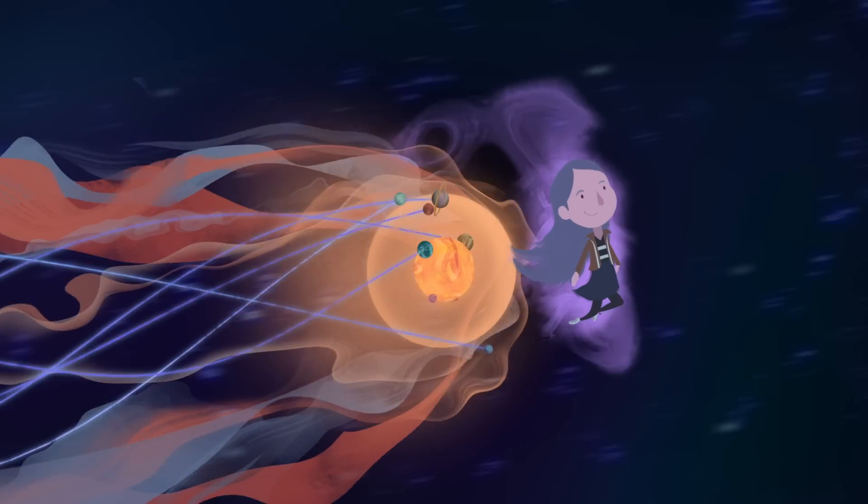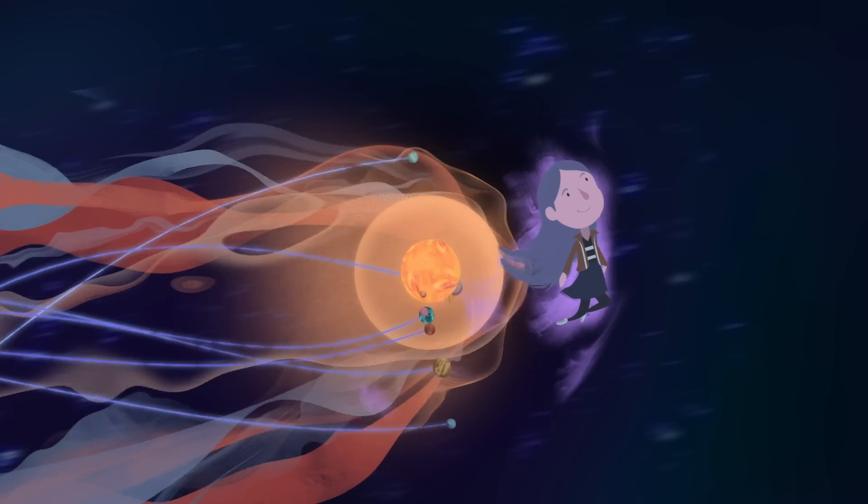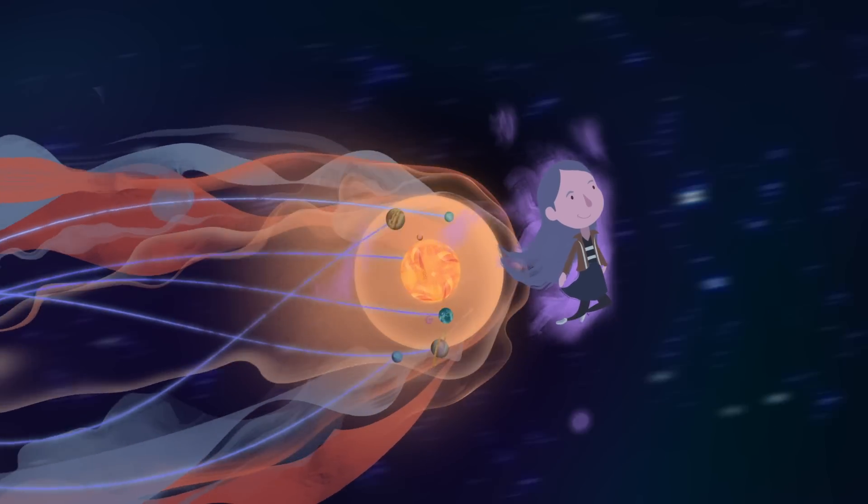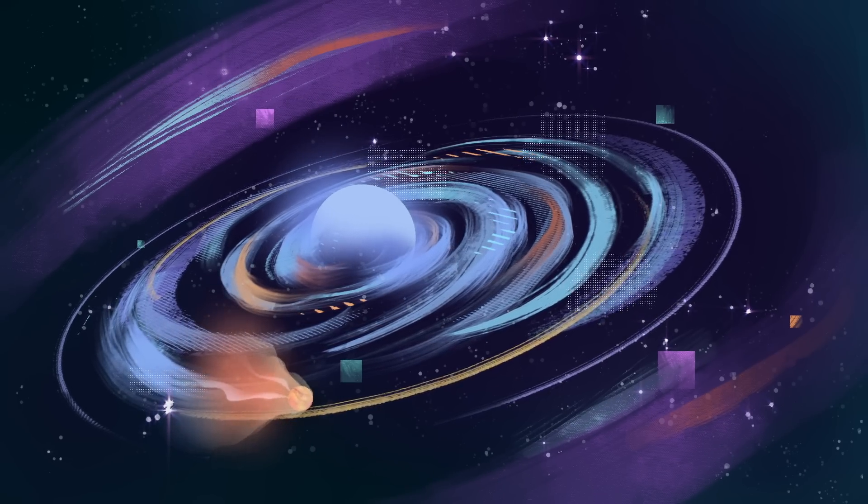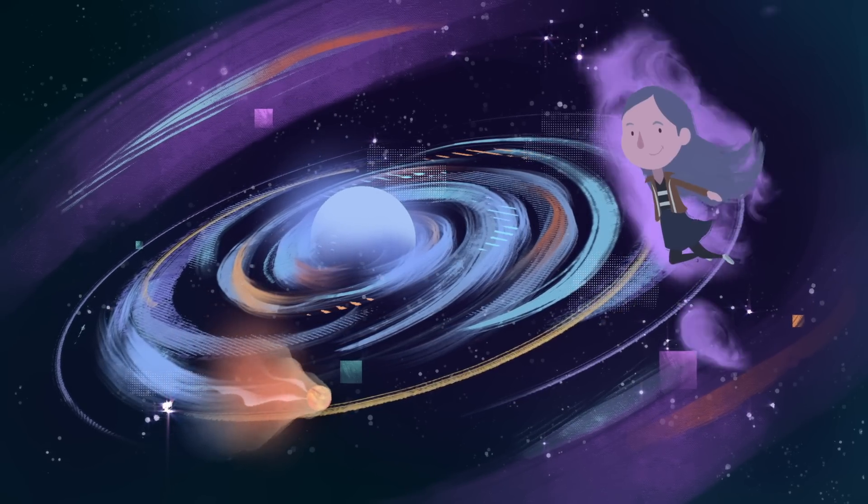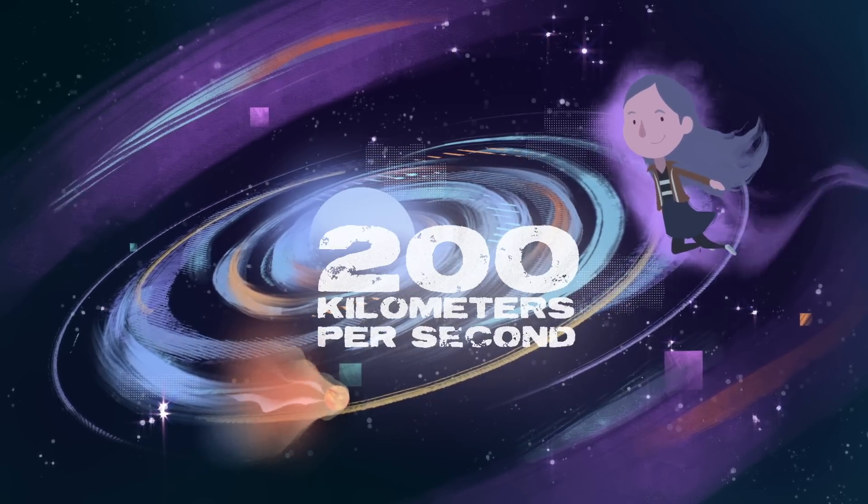Our entire solar system is contained within the heliosphere, a bubble of charged particles emitted by the sun. That bubble orbits the Milky Way's center, which harbors a supermassive black hole, at a speed of about 200 kilometers per second.